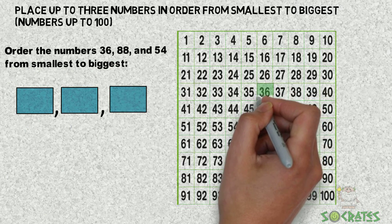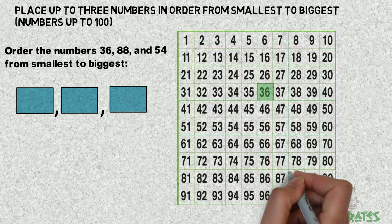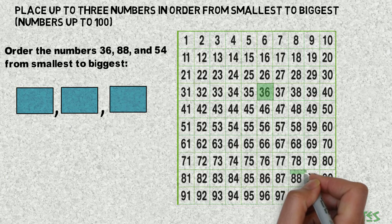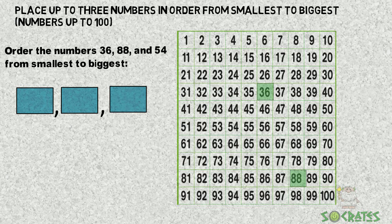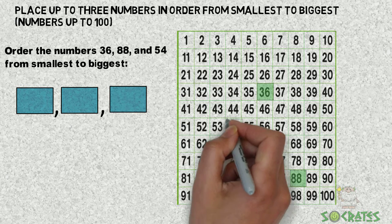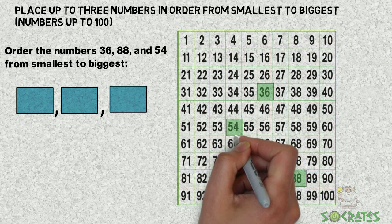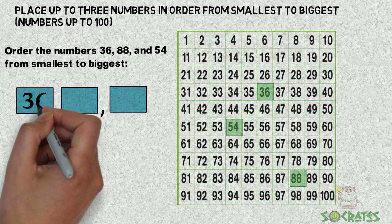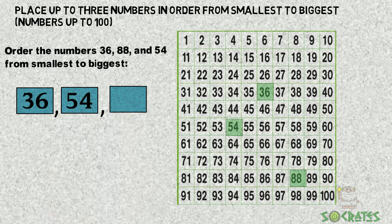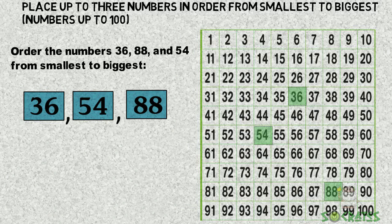Let's find 36, and next we're going to look for 88, which is down at the bottom. And then we will find 54, which is towards the middle. So to put our numbers in order, we're gonna start with 36, next is 54, and then 88. And those are numbers from smallest to biggest.